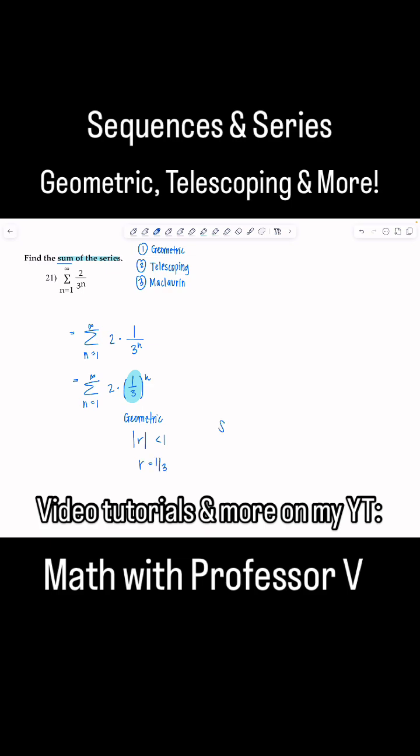So the infinite sum, sometimes people write it s, sometimes they put s sub infinity, doesn't matter. It's always the first term divided by 1 minus r. I don't like to always put a sub 1 because sometimes the first term starts at 0 or somewhere else. So I just write a, but remember it's the first term of the series.